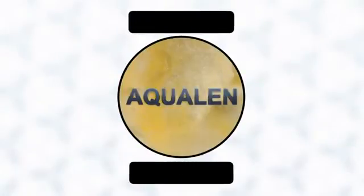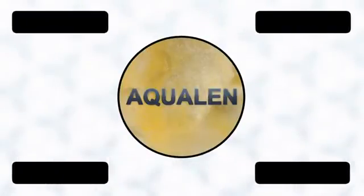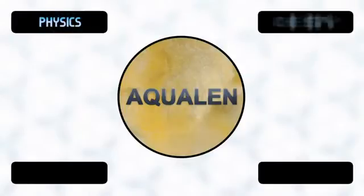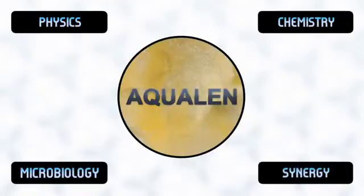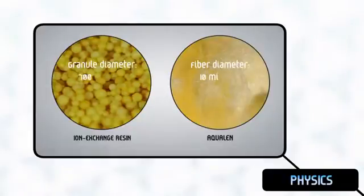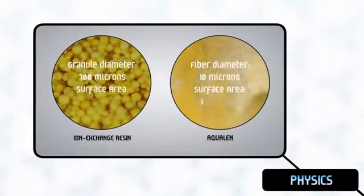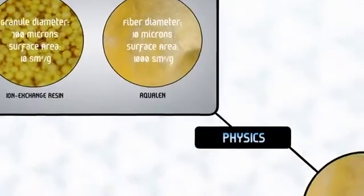Aqualand has a considerably larger outer surface compared to traditional absorbents due to the unique shape of the material. This results in a higher rate of removing impurities from the water.